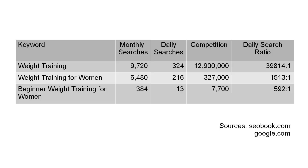For weight training, there are 9,720 monthly searches and 324 daily searches. But the competition is 12,900,000 websites for that keyword, so your chances of getting to the first page of Google, let alone the top position, are going to be very slim. The daily search ratio is 39,814 to 1.